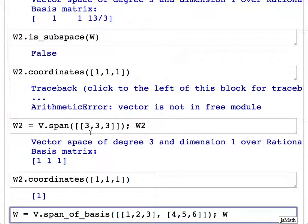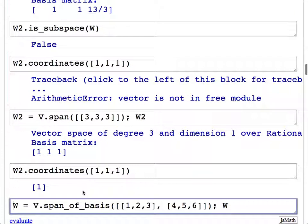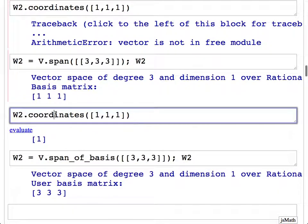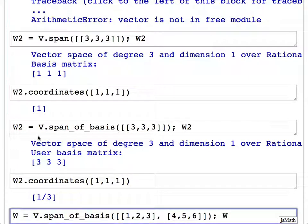It takes the input vectors by default and puts them in reduced row echelon form. So it doesn't give you back one-third. Notice that when this printed out, it said the vector space has basis matrix [1,1,1]. It doesn't matter what your list of vectors is - it takes them by default and puts them in reduced row echelon form. That's what it's giving you the coordinates with respect to. You can construct a subspace with a specific basis. That's what the span_of_basis command is about. If instead of just saying span, you say span_of_basis, you get a vector space with the basis that you asked for.